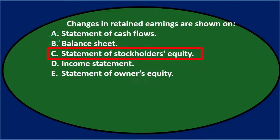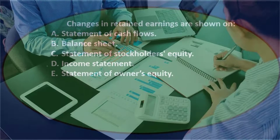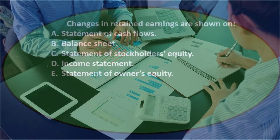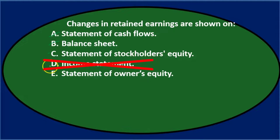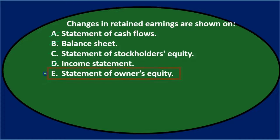C says statement of stockholders' equity — if there was a change to be shown, you would think it would be on something called the statement of stockholders' equity, so I'll keep that. D says income statement — that shows a change, but it shows the change in net income, which is only part of the change for stockholders' retained earnings; it doesn't show beginning and ending format or dividends. E says statement of owner's equity — the owners are the stockholders, so that might sound reasonable. I'll keep that for now.